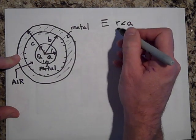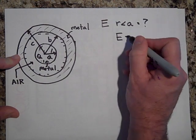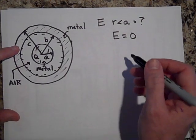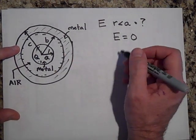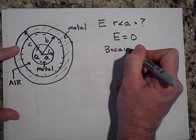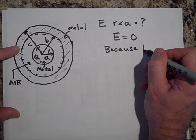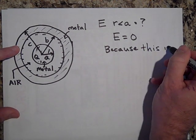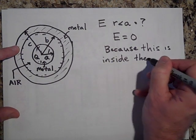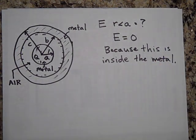So at R less than A, the electric field is equal to zero, because it's inside the metal and any metal that's in equilibrium has no field in it. So we don't have to apply Gauss's law. We just know because this is inside the metal.